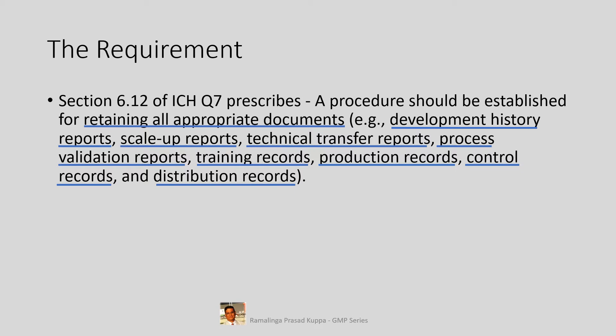Process Validation Reports are also important documents negotiable with customers, including regulatory agencies, because the data from these initial validation lots will be used for regulatory filings. These documents may have to be retained longer, as the customer may request the data to respond to any regulatory query. Other routine manufacturing records — including Training Records, Production Records, Control Records, and Distribution Records — can be archived for shorter periods as prescribed in Section 6.13.